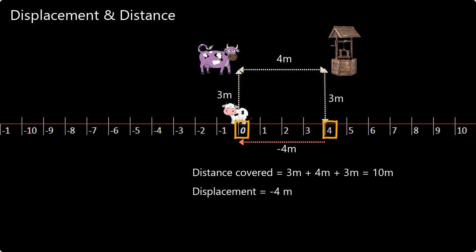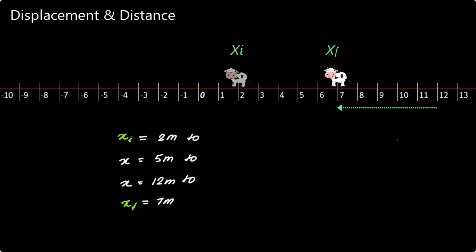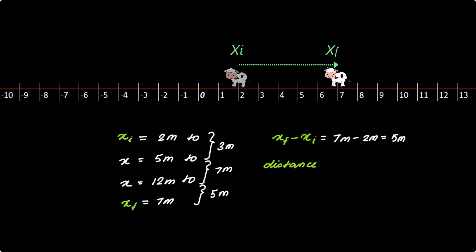Another example to understand the difference between distance and displacement: the cow moved from an initial position of 2 meters to 5 meters, then to 12 meters, and then back to 7 meters as the final position. The displacement is x_f minus x_i, which equals 7 meters minus 2 meters, or 5 meters. We do not care about where the cow went between x_i and x_f — what is important is x_i and x_f. On the other hand, if we are asked to find the distance covered by the cow, it would be important to know where all the cow went. So the distance covered is 3 meters plus 7 meters plus 5 meters, or 15 meters.